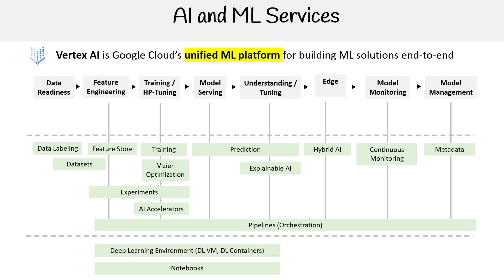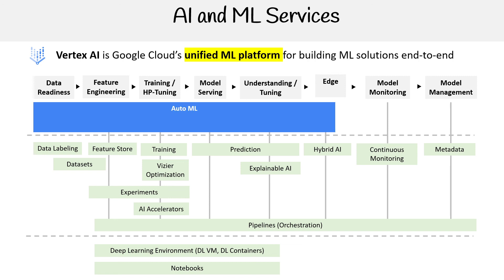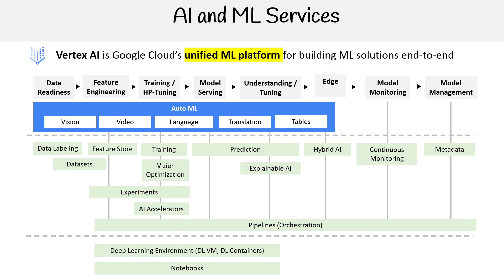Then we want to automate the entire thing, so we have pipelines — this is called MLOps. It's the automation of the end-to-end pipeline for building, training, inferring, and deploying a model. Then we have AutoML, which automates a lot of this away — it's kind of like platform-as-a-service for machine learning. It can handle vision, video, language, translation, and tables. You just upload your data and it pretty much does the rest for you — it runs a bunch of experiments and you choose which is the best one, making it easy even if you don't know what you're doing.